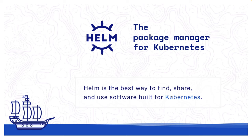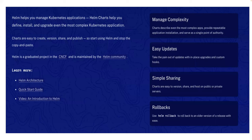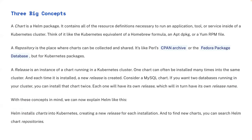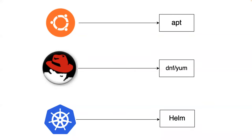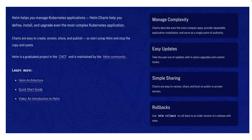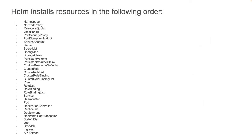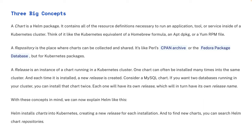Helm is the best way to find, share, and use software built for Kubernetes — just like Ansible Galaxy for Ansible playbooks, or Docker Hub for Docker images. You go to Ansible Galaxy, find a playbook, make minor modifications, and use it. You go to Docker Hub, find a Java image, use it as a base image. The concept is similar in DevOps. In Kubernetes, this concept is called package management. Note: don't practically compare Ansible Galaxy with Helm — that was just for reference.